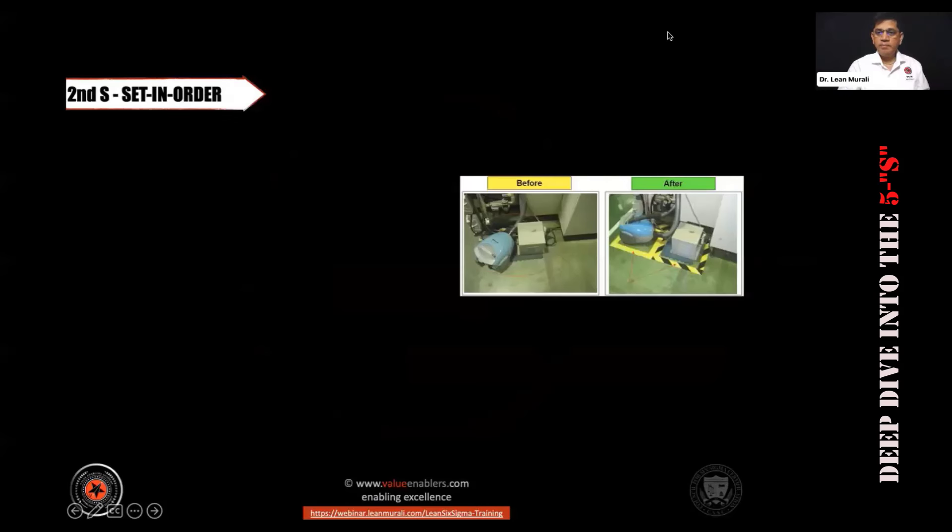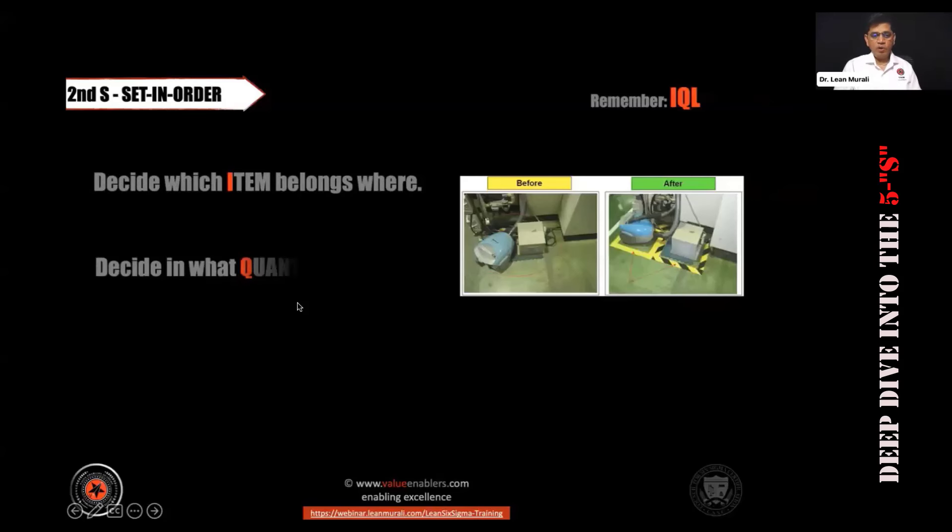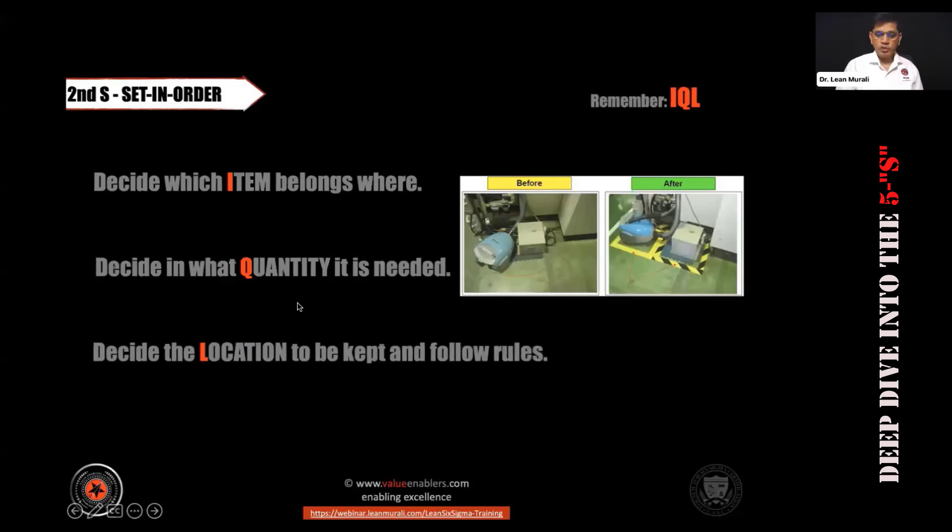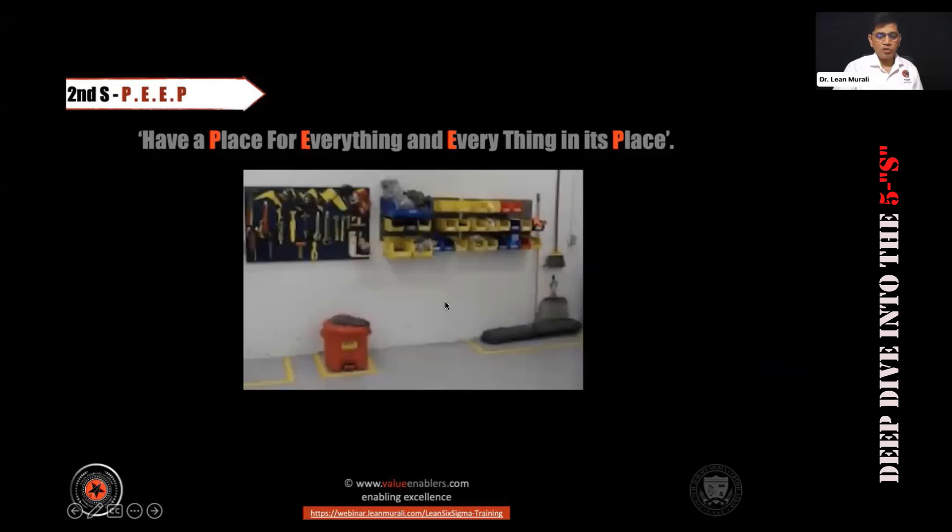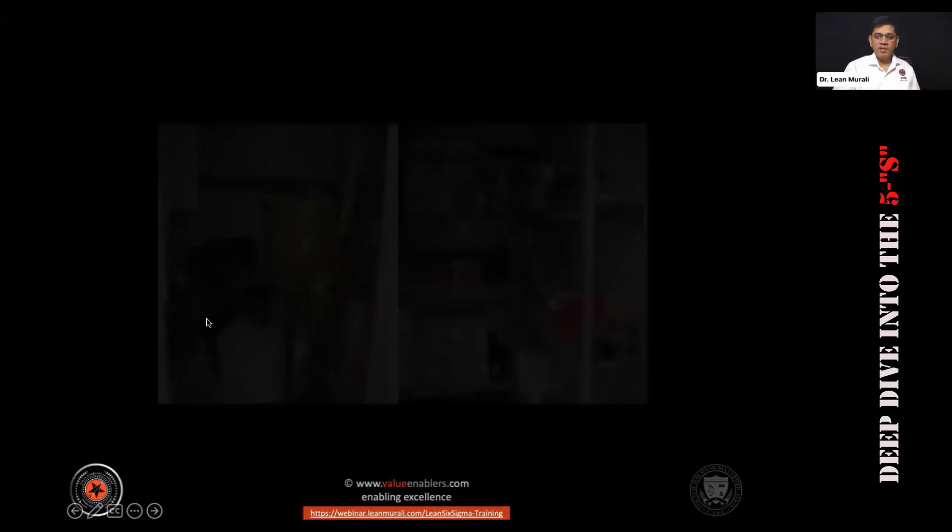This is the set in order. There are some before pictures, after pictures. And you remember what is called as IQL? How many of you remember IQL? IQL is decide which item it belongs to, decide in what quantity is needed, and decide the location to be kept and follow the rules. So item, quantity, location. Please write in your notebooks, remember this IQL - item, quantity, location. So a place for everything, everything in its place. All of you type PEEP in the chat box. This is a quiz question, by the way - place for everything and everything in its place.